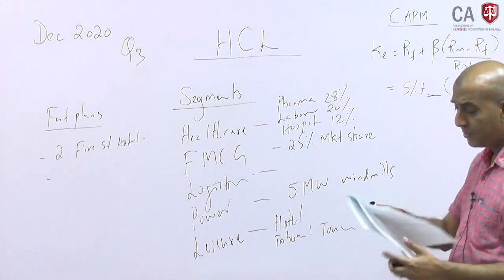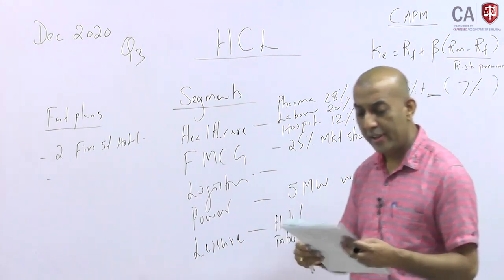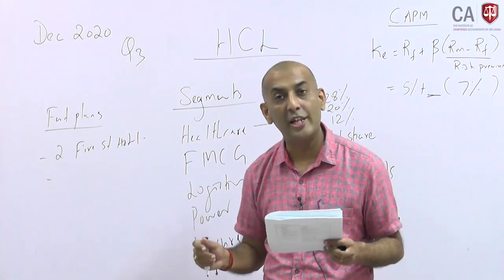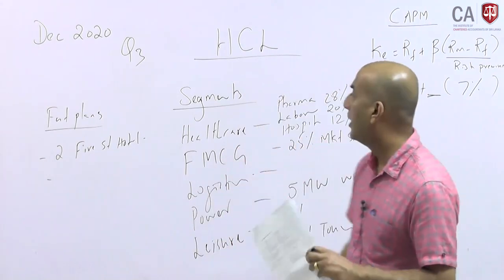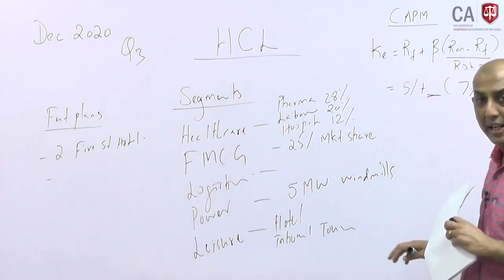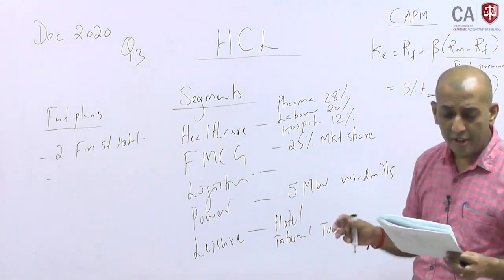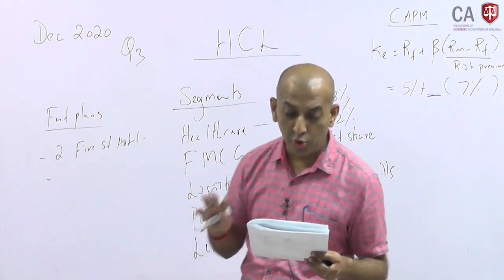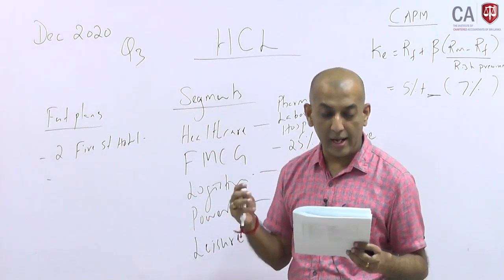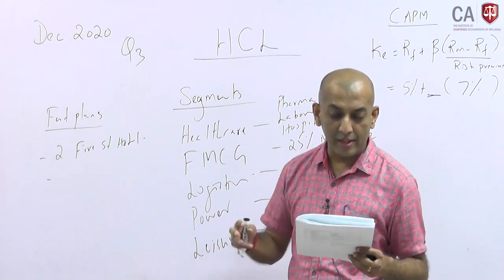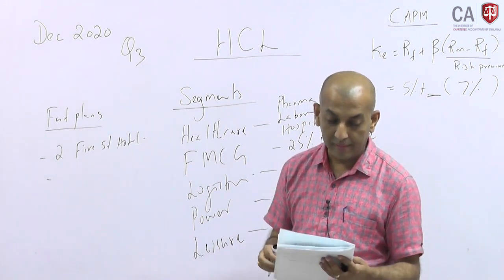Since HCL's beta is not given, we are given the competitor company ABX PLC with beta 1.10 and debt-equity ratio 1:2. We need to find out the beta of HCL using company-to-company beta. They have also given two companies — DEF and GHI — with enterprise value, EBITDA, market price, and number of shares, which we may use for some reason.